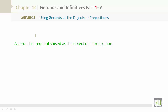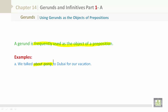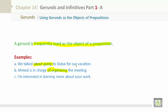A gerund is frequently used as the object of a preposition. Examples: We talked about going to Dubai for our vacation. Ahmed is in charge of organizing the meeting. I'm interested in learning more about your work.